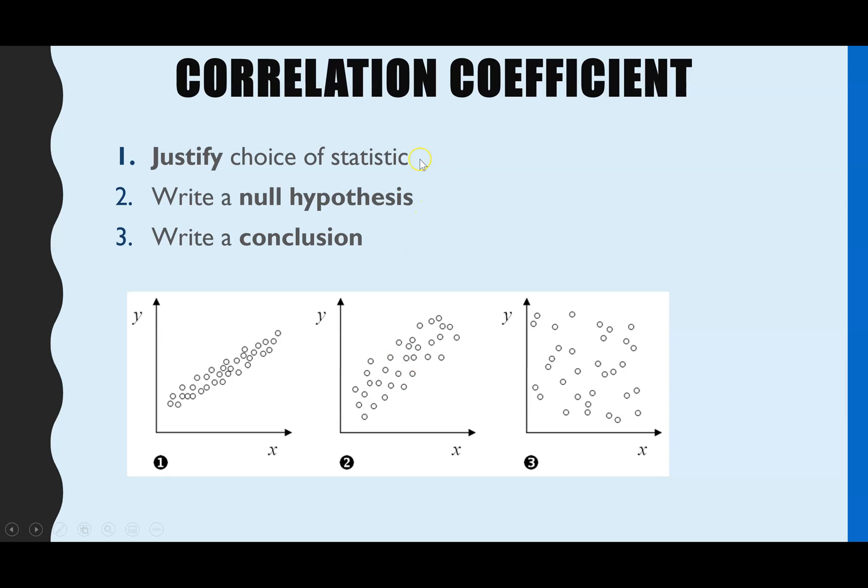So to justify your choice of a statistic as we said you would be using a correlation coefficient if you have two continuous variables that you're looking for an association between them. So that would be your one mark of why would you be using the correlation coefficient.